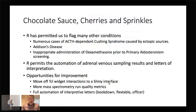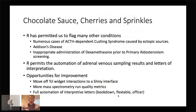R has permitted us to find some other conditions too. We found a number of cases of ACTH-dependent Cushing syndrome caused by ectopic carcinoid tumors. We found lots of Addison's disease, and we found inappropriate dexamethasone administration before primary aldosteronism screening — that just happened yesterday, for example. We have a few opportunities for improvement: I've been using TCL widgets because this was developed before Shiny existed, so we could move this whole thing to a Shiny interface and incorporate more mass spectrometry quality metrics in the reporting. It would also be nice to have full automation of some of the interpretive letters for the tumor localization procedures.